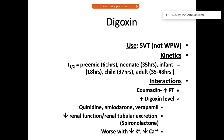Digoxin has numerous drug interactions. When used with cimetidine it can increase prothrombin time. Combined with quinidine, amiodarone, or verapamil, it raises digoxin levels. Renal tubular excretion may be affected when used with spironolactone.